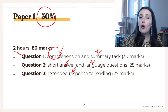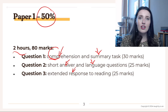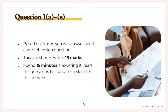I've got video lessons for all these different questions on my website, so feel free to check out the full free course. For the short answer questions — questions 1A to E — you'll read one short text (Text A) and answer some short basic comprehension questions. It's the easiest question on the paper, so don't spend too long on it. It's worth 15 marks, so spend about 15 minutes and briefly read the questions first, then quickly skim through to find the answers.